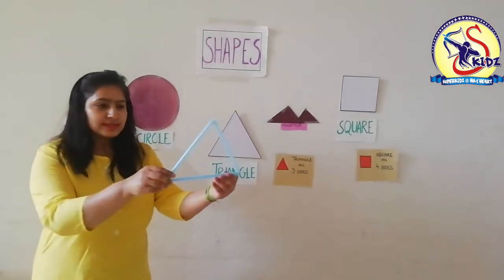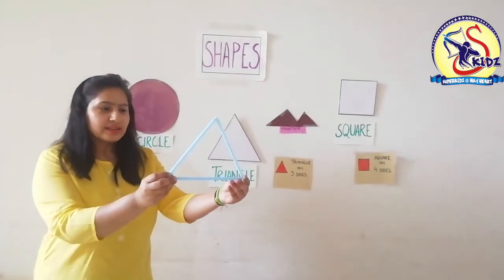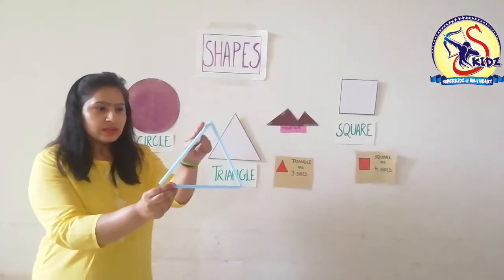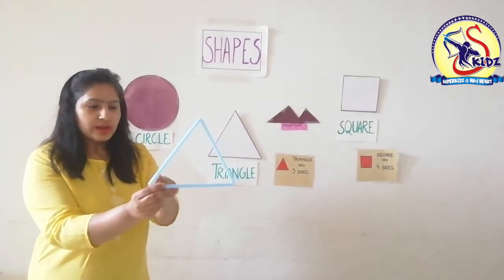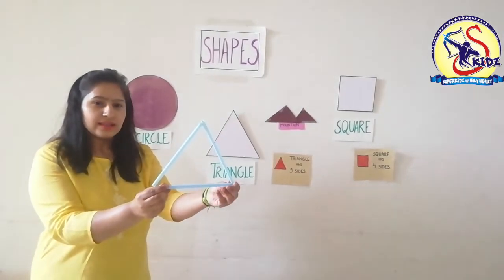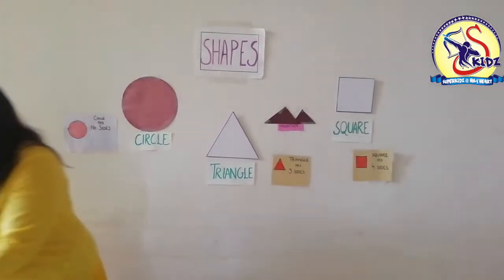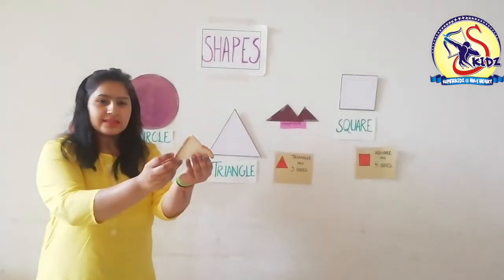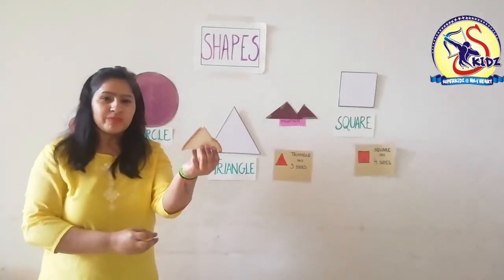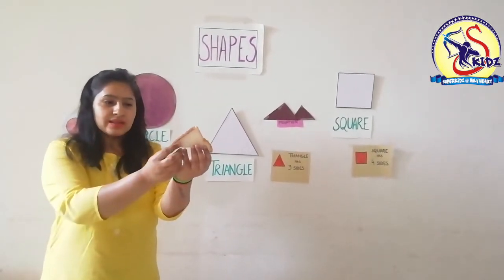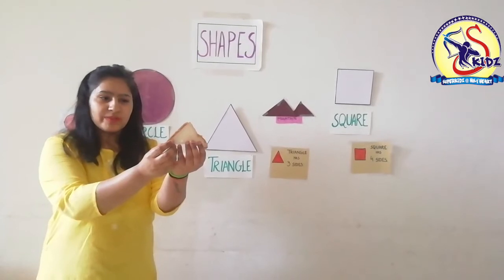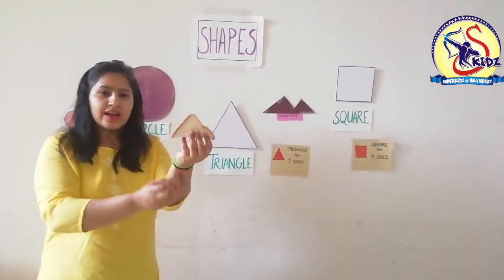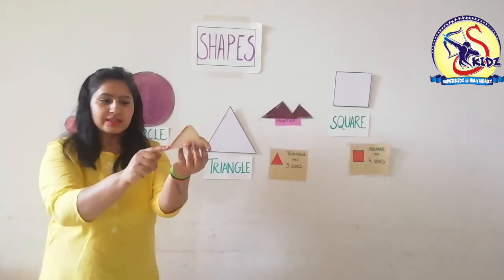What is this? This is a triangle. It has three sides — one, two, and three. Triangle has three sides. This is a piece of bread. What is the shape of this piece? It is triangular in shape. It has three sides.